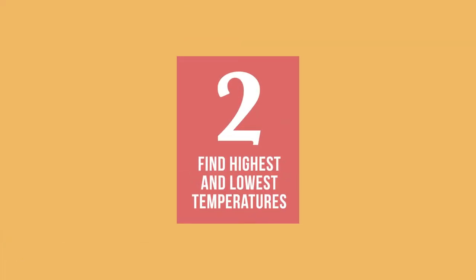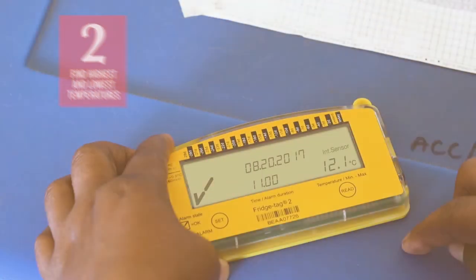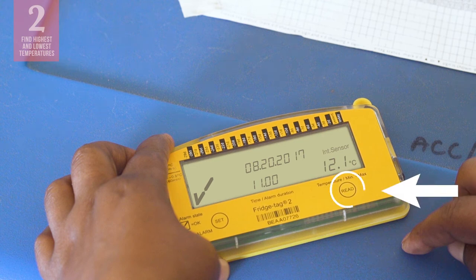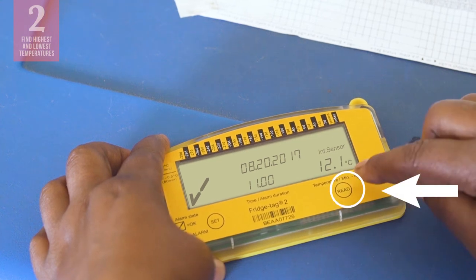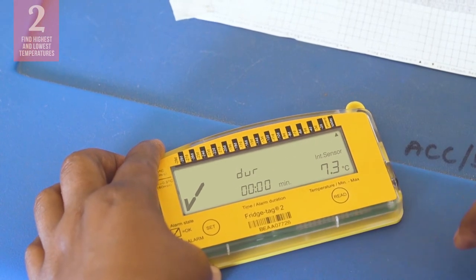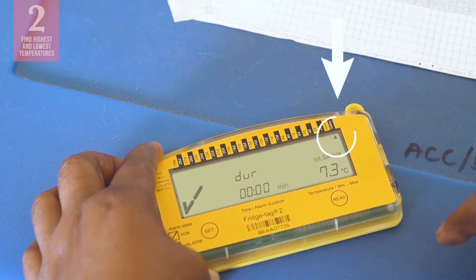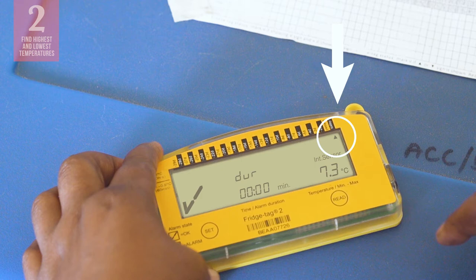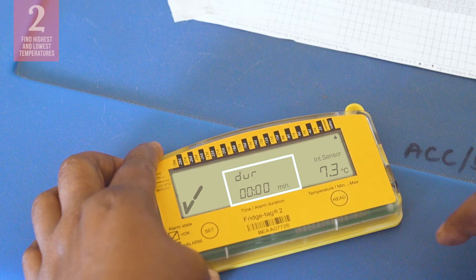The second important task is to find the highest and lowest temperatures for the day. To do that, you will use the Read button. Start by pressing the Read button once. At the top of the display, you will see a flashing up arrow appear. The flashing arrow is a sign that you are looking at the highest temperature of the day. In the center of the display, you will see the amount of time that recorded refrigerator temperatures were above 8 degrees Celsius today.